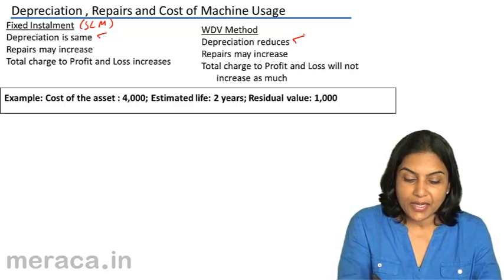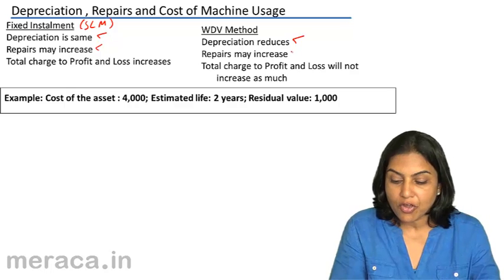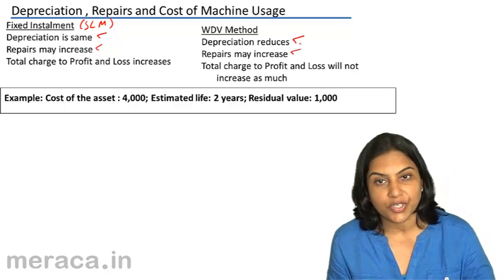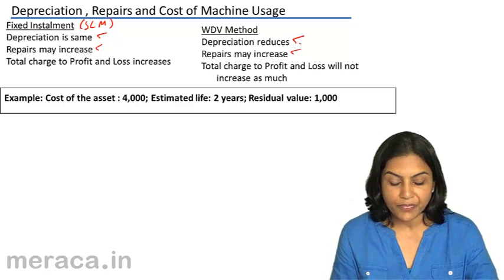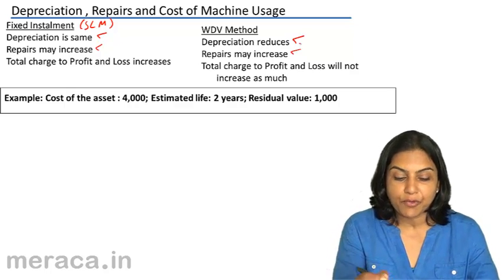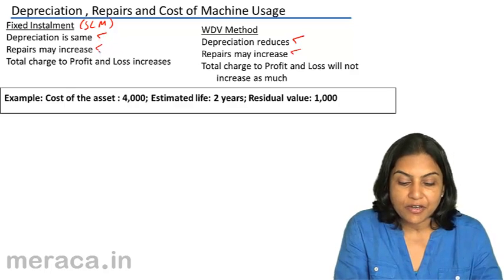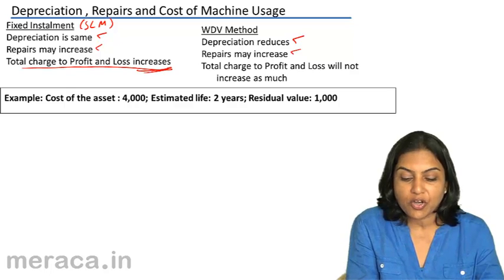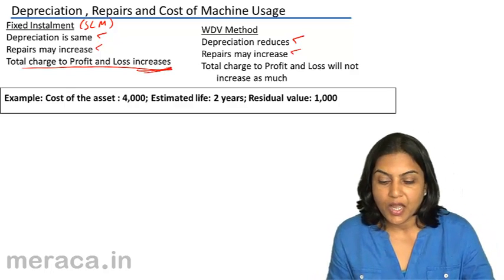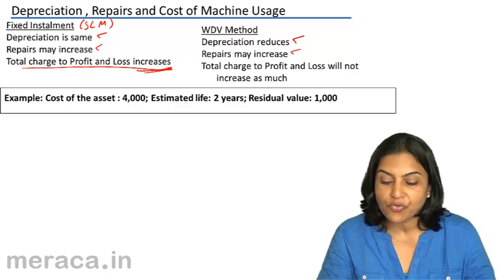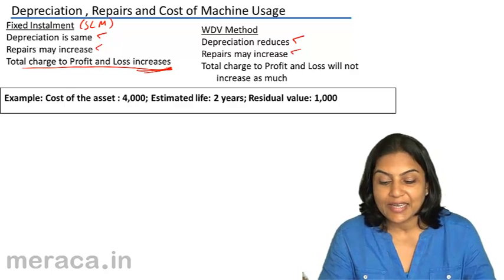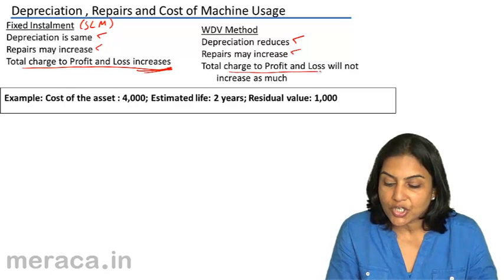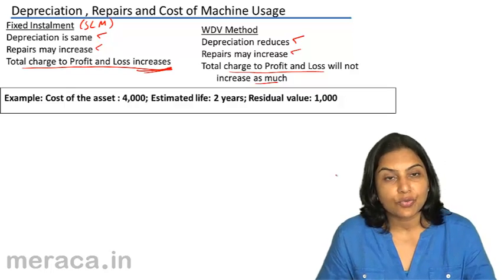Repairs may increase. We are considering the same scenario, so repairs would increase whether we follow the fixed installment or the written down value method of depreciation. Therefore, if depreciation is the same and repairs increase under the straight line method, the total charge to profit and loss will increase. However, under the written down value method, depreciation decreases and repairs increase, so the total charge to profit and loss may not increase too much.